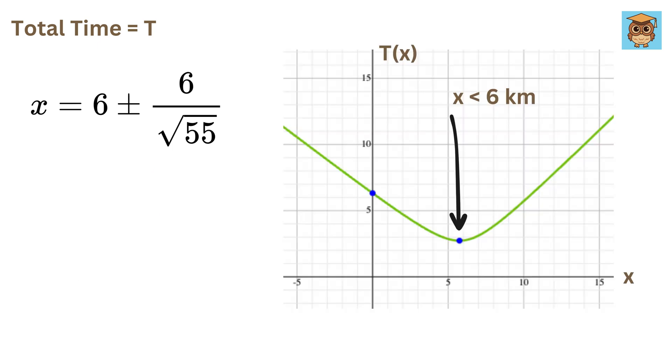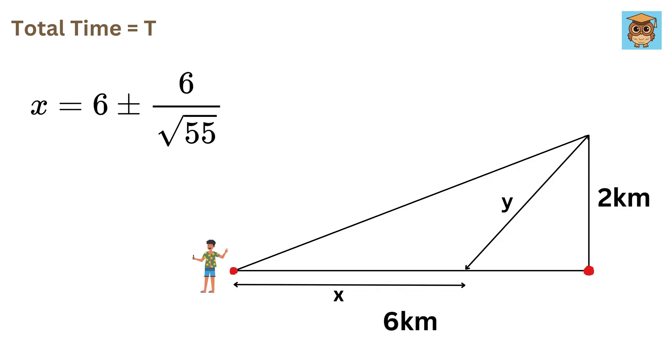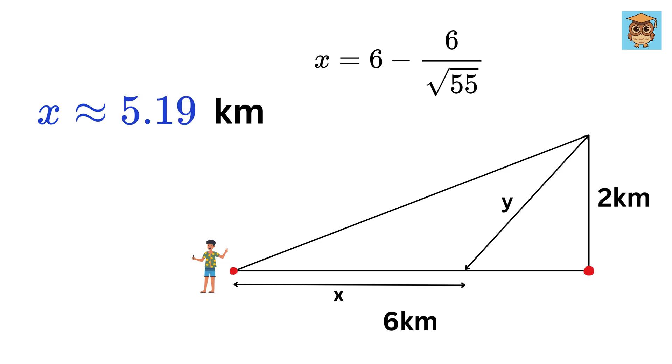As we have seen from the graph, the value of X is less than 6 kilometers, and that also makes sense, therefore we can discard this plus. And finally, we have X equals 6 minus 6 over the square root of 55, which in decimal is roughly equals 5.19 kilometers. So Alex should run approximately 5.19 kilometers along the beach before entering the water. From there, he swims the remaining distance to the island. This gives Alex the fastest route possible.